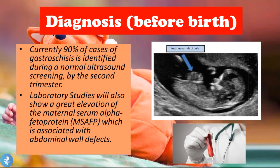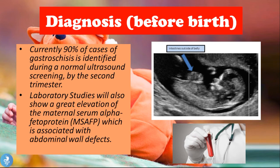Currently, 90% of gastroschisis cases are identified during normal ultrasound screening by the second trimester. Looking at the ultrasound image, we see the anterior abdominal wall and a cauliflower-shaped bulge representing the loops of bowel that have protruded through the abdominal wall defect and are now in contact with the surrounding amniotic fluid. Lab studies will also show a significant elevation of maternal serum alpha-fetoprotein, which is associated with abdominal wall defects and serves as another indicator of a possible abdominal wall defect.